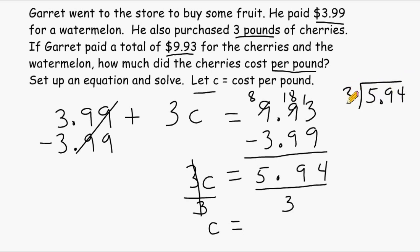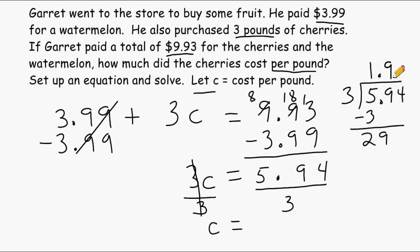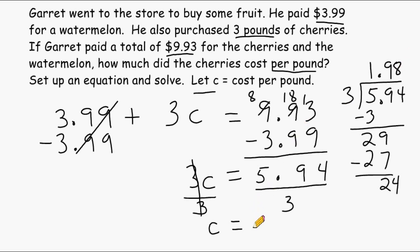We move the decimal straight up, then divide three into five, which goes in once. Five minus three is two; bring down the nine — three goes into twenty-nine nine times, which is twenty-seven. Bring down the last digit four — three goes into twenty-four exactly eight times. So we have determined that Garrett paid $1.98 for each pound of the cherries.